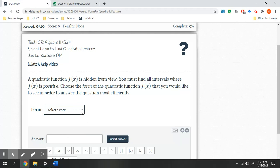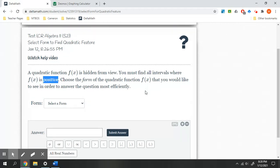Depending on what it is asking, that will help us figure out which form to choose. So a quadratic function f(x) is hidden from view. You must find all intervals where f(x) is positive. Choose the form of the quadratic function that you would like to see in order to answer the question most efficiently.